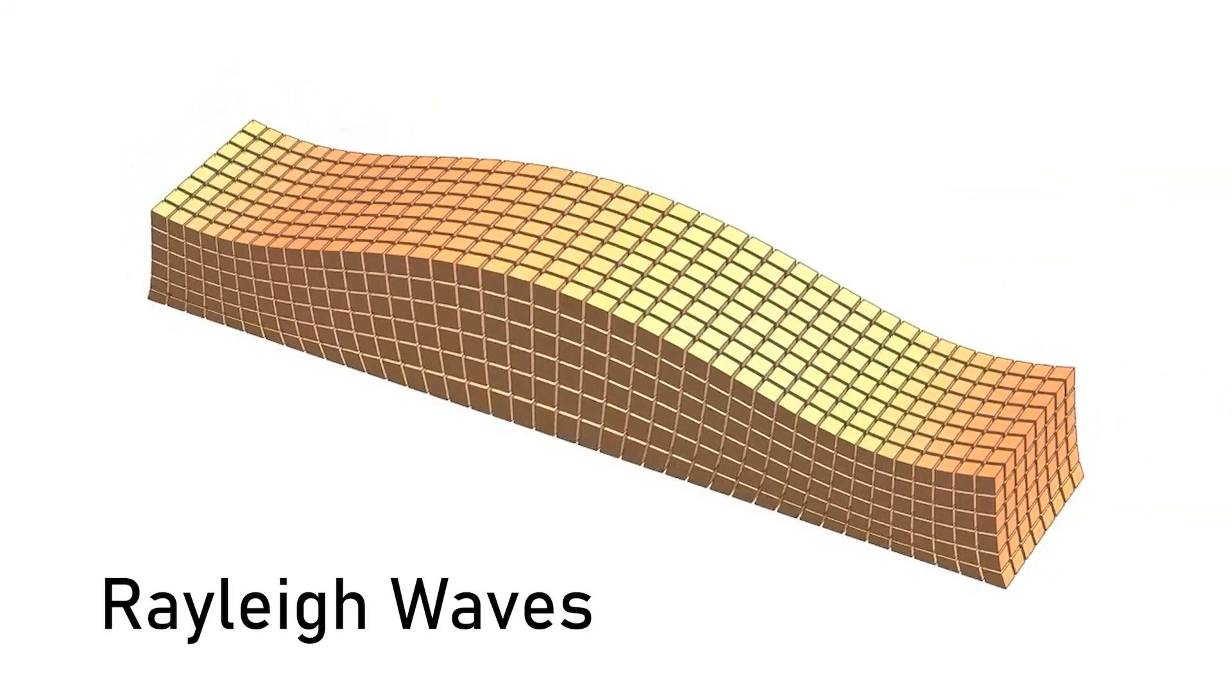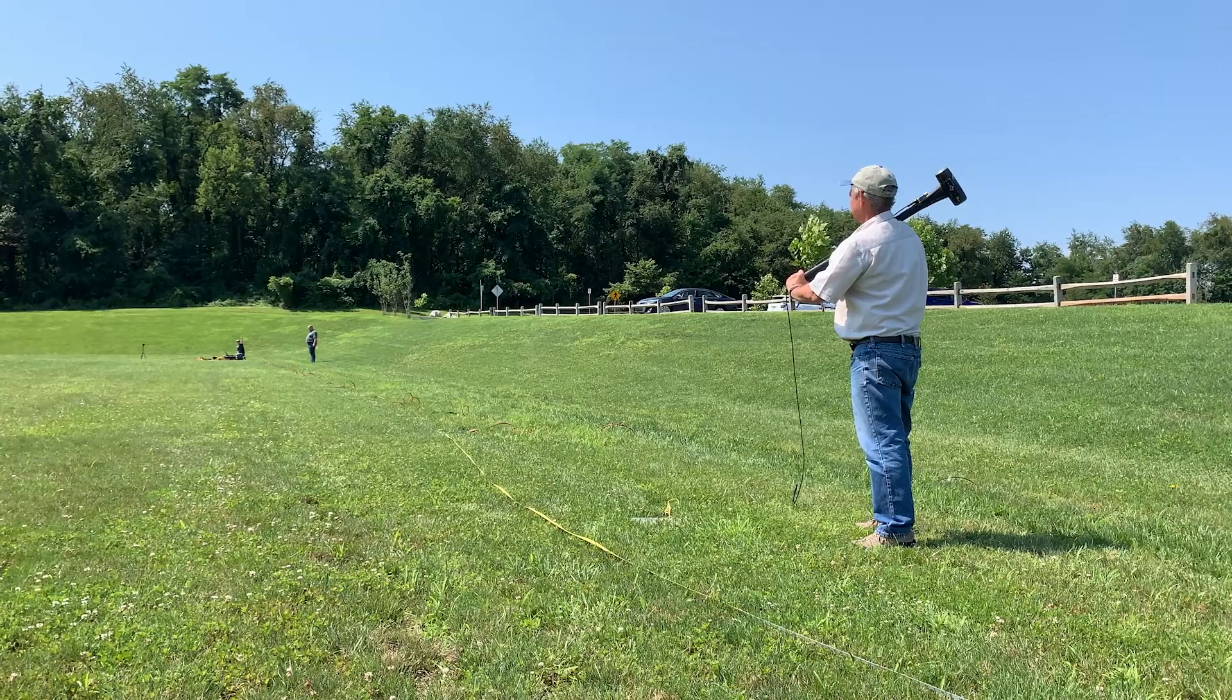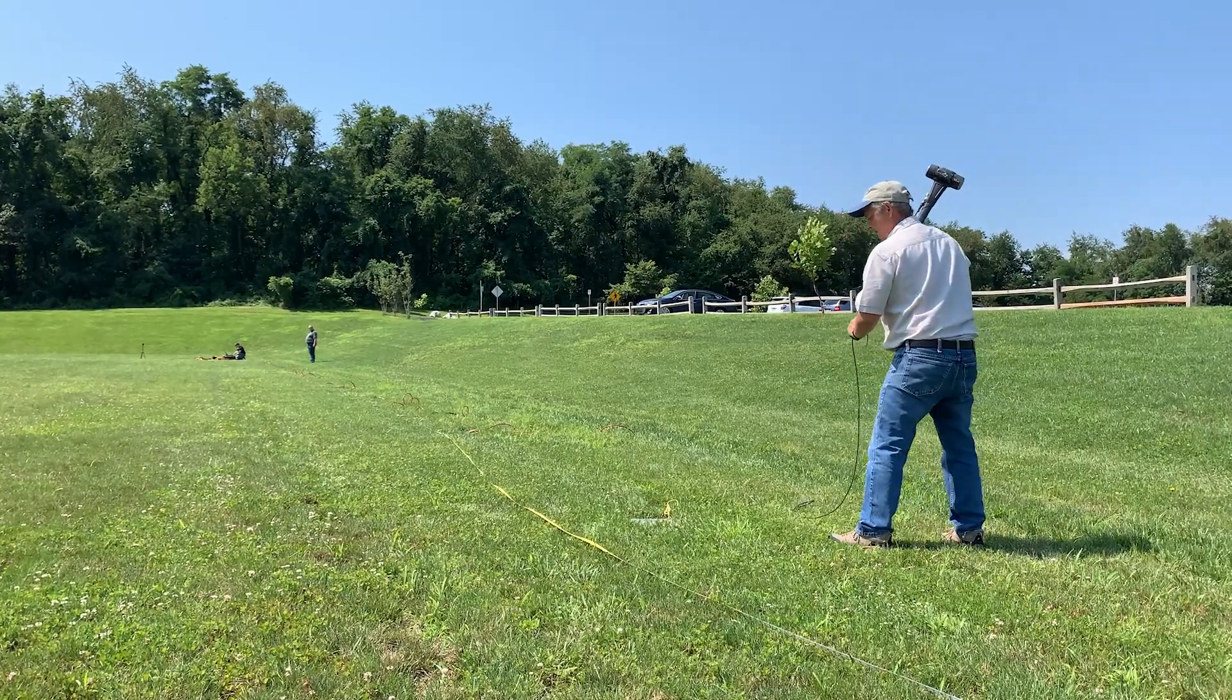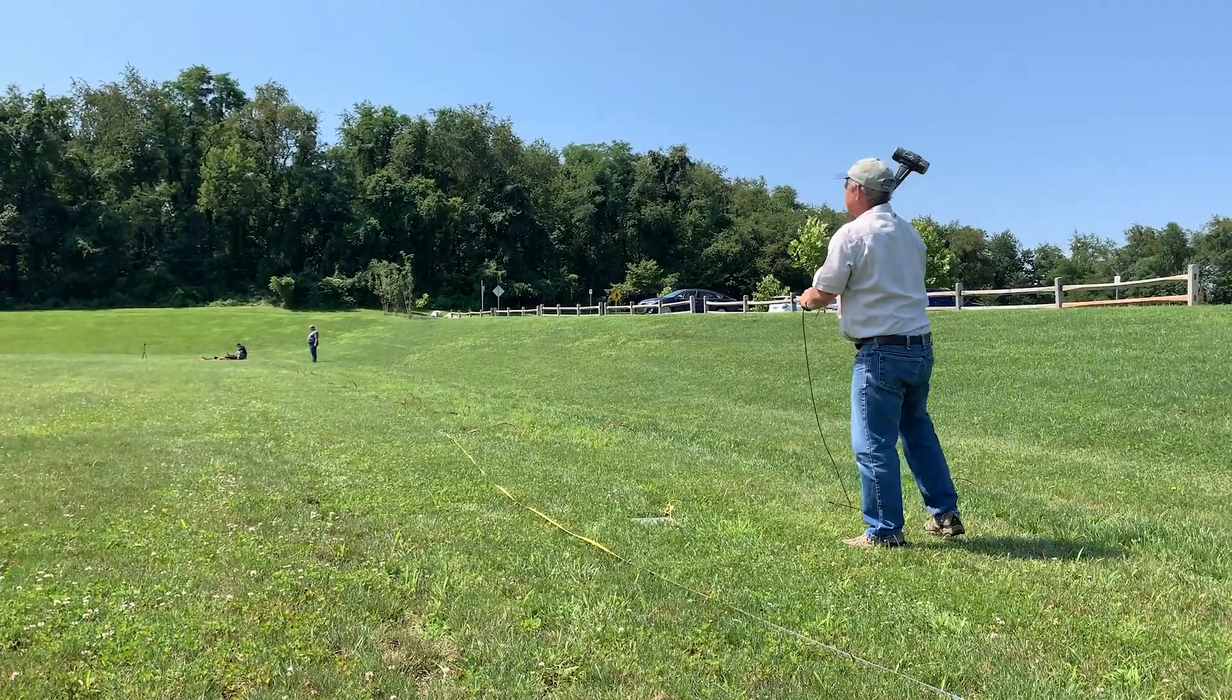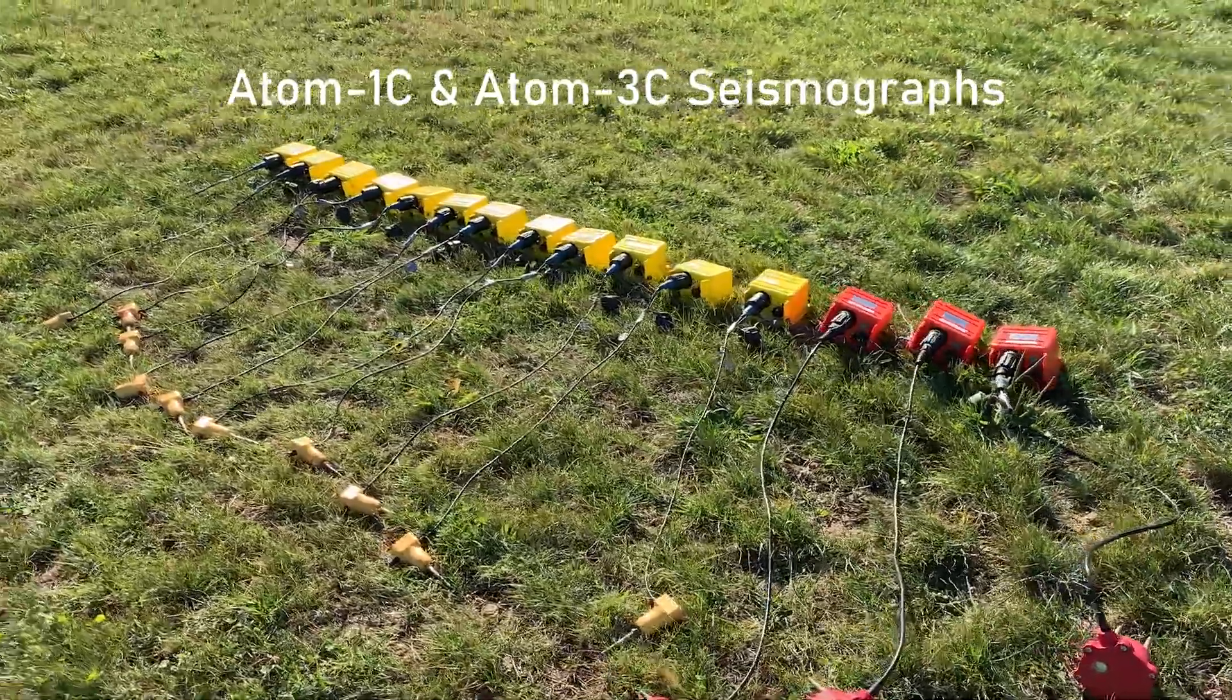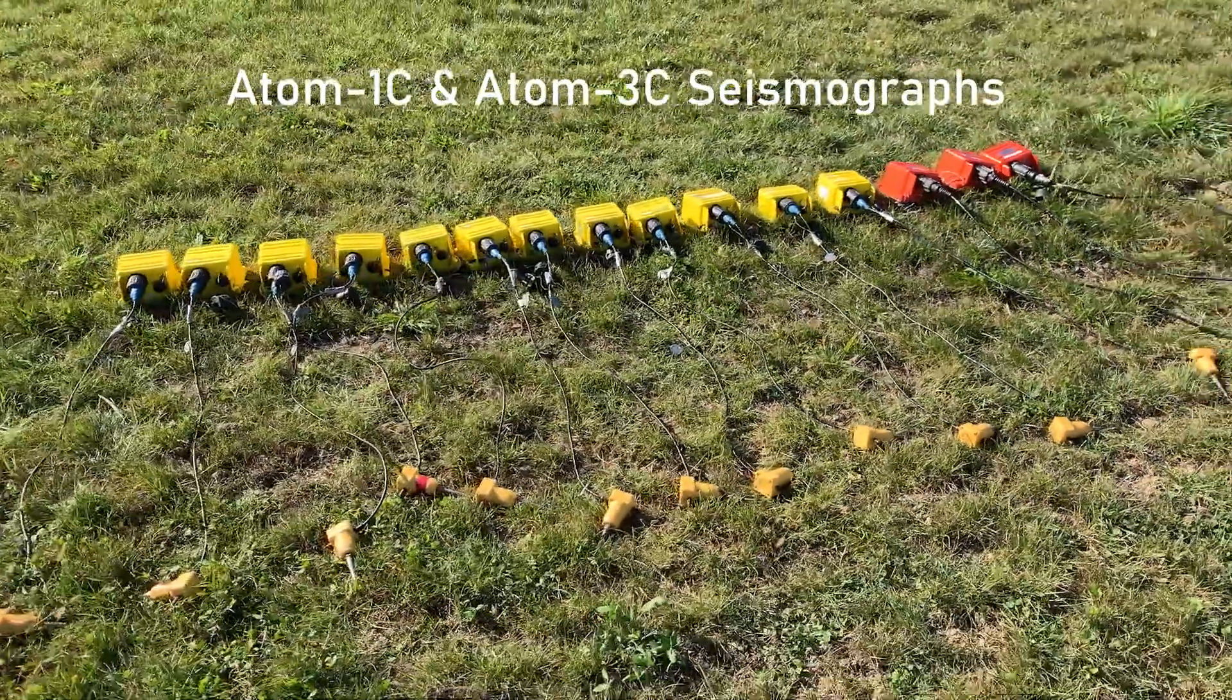Surface waves dominate the seismic energy spectrum because of their high amplitude. Surface waves can be generated actively by impacting energy into the ground, or they can be recorded passively, as naturally existing microtremors which propagate through the earth are easily recorded with modern seismographs.